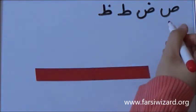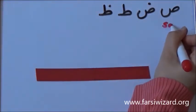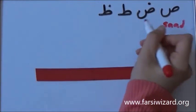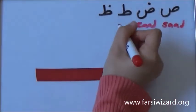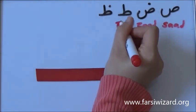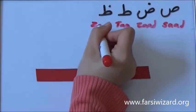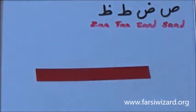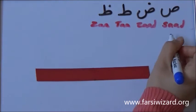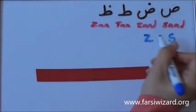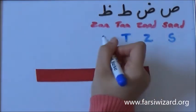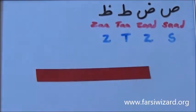Okay, the first letter is Sod, as you can see, the second one is Zod, the third one is Taw, and the last one is Zaw. Now we're going to learn how to write and how to use each of these letters in words. I'm also going to write the English equivalents for each. As you can see, we have another version of S, two versions of Z, and another version of T.